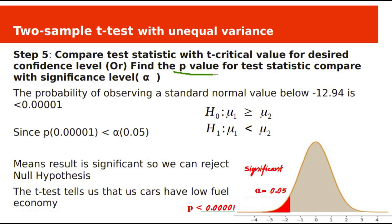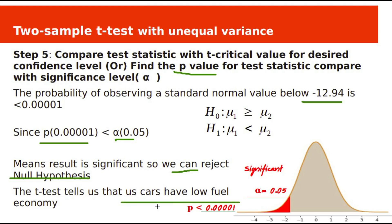Testing with p-values: the p-value for t-statistic −12.94 is less than 0.00001. Since the p-value is less than alpha 0.05, we can reject the null hypothesis — meaning US cars have lower fuel economy than Japanese cars at 95% confidence level.